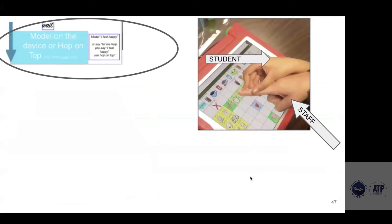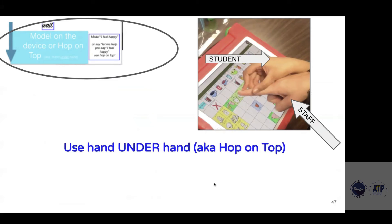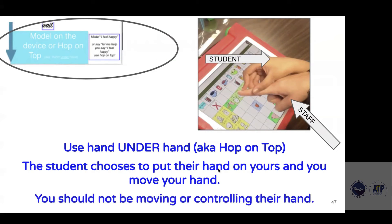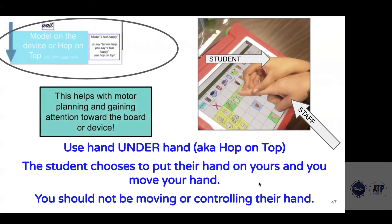In this picture, you can see the staff member's hand — they're the pointer on the bottom — and the student grabs their finger and follows along. It's a nice way for the student to visually gain attention toward the device and also develop that motor hand piece. Use hand under hand or hop on top: the student chooses to put their hand on yours. You should never be moving or controlling their hand, but if they voluntarily place their hand on yours, you can compose what you think they're trying to say and they can validate it.